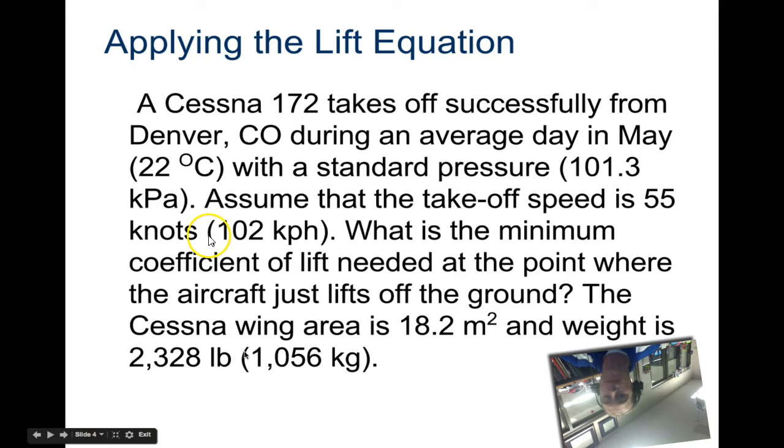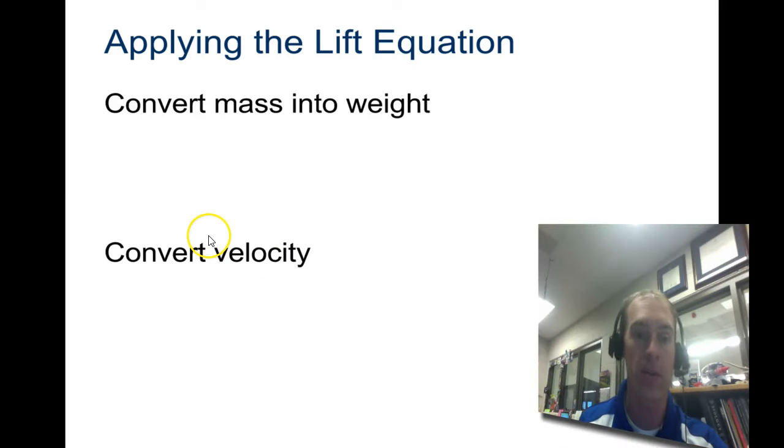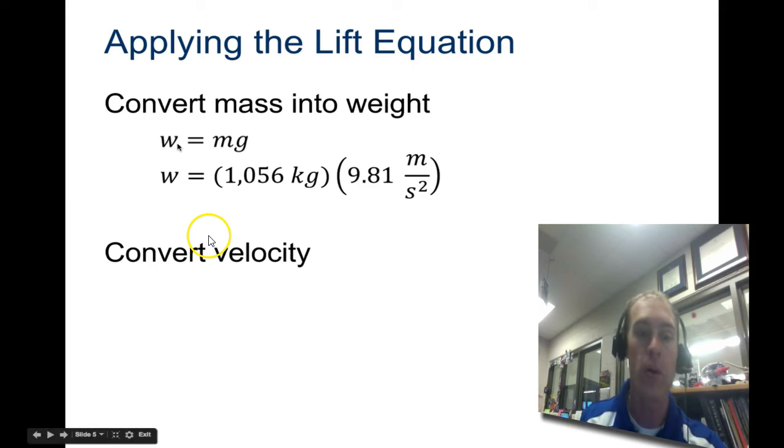We're given its metric mass in kilograms here, so that would have to be converted into newtons. The equation is weight equals mass times gravity: W = mg. Gravity is 9.81 meters per second squared, so we get 10,359 newtons.